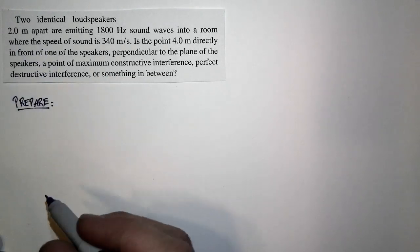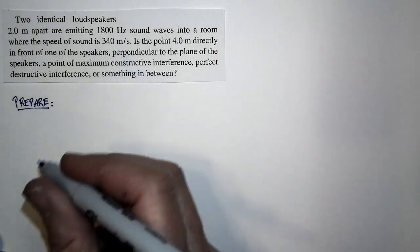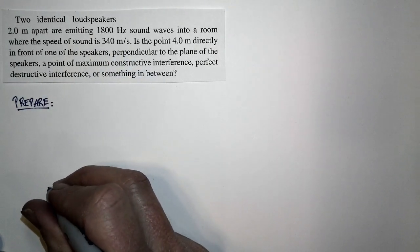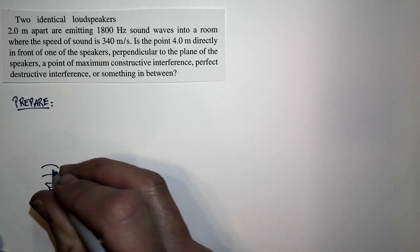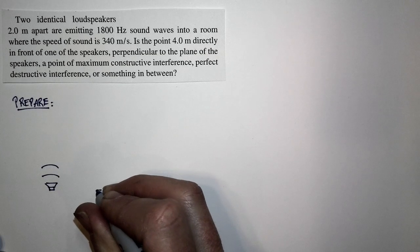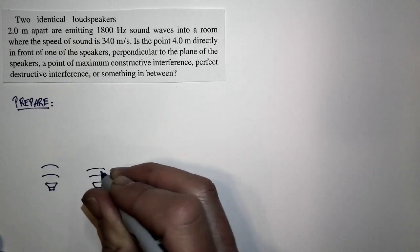There are two identical loudspeakers two meters apart emitting 1800 Hz sound waves into a room. So it looks like this. Here's one loudspeaker emitting sound waves. There's a second loudspeaker two meters apart, and it's emitting sound waves as well.